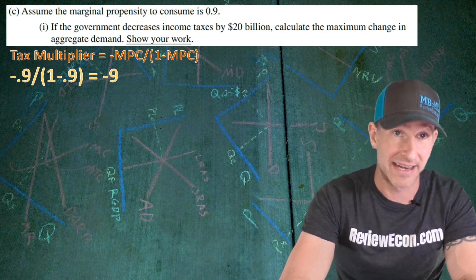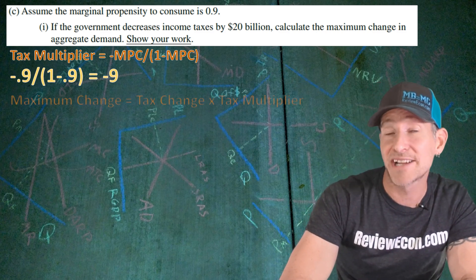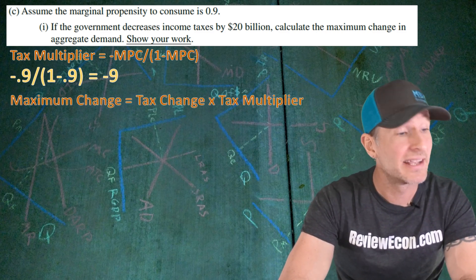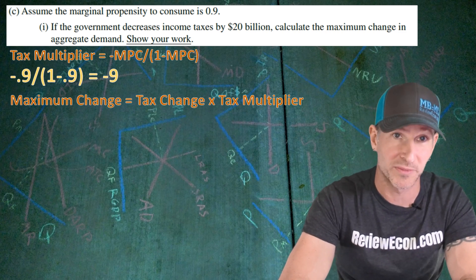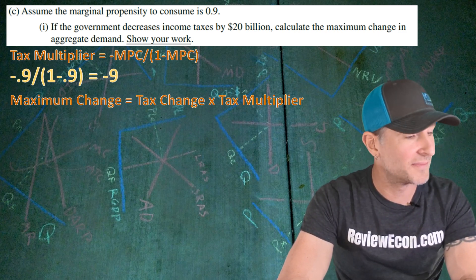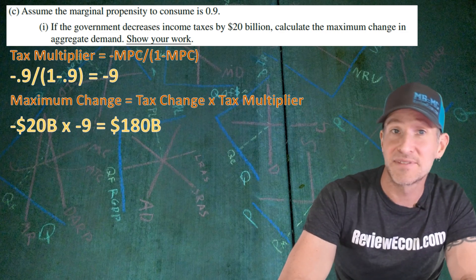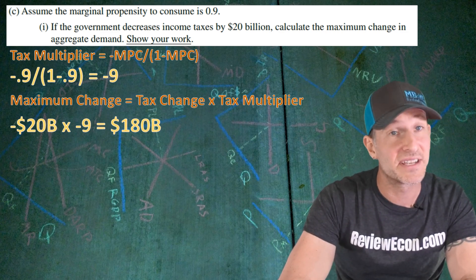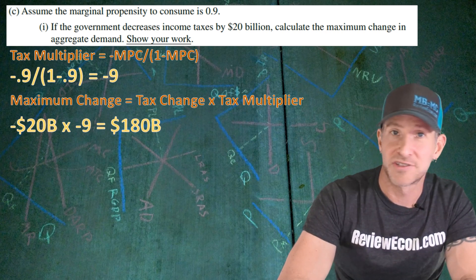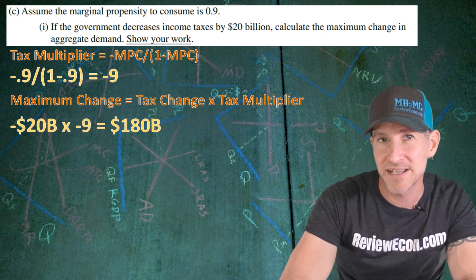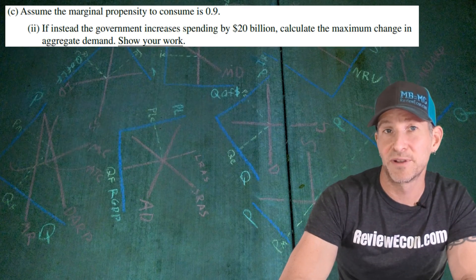As long as you understand that a decrease in taxes causes an increase in aggregate demand, the maximum change in aggregate demand is the tax change times the tax multiplier. Plugging in the numbers: negative $20 billion times a negative 9 multiplier gives us an increase of $180 billion. Make sure you specify that it's a $180 billion increase.